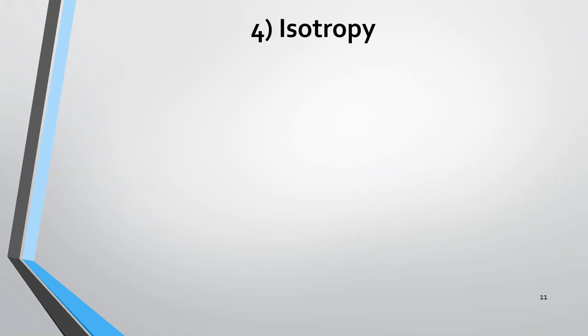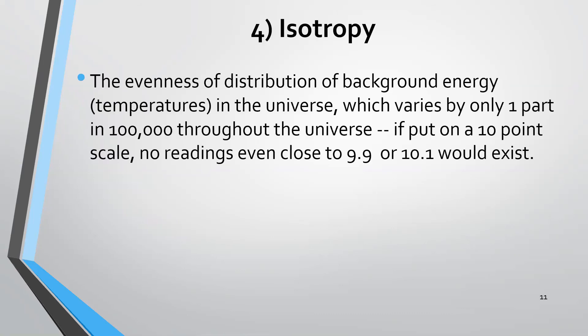Isotropy, this is the fourth one. Isotropy is the level of evenness of the distribution of background energy or temperatures in the universe, the evenness of the spread of the energy and the matter throughout the universe. It varies by only one part in 100,000 throughout the universe. Anywhere you look up in the night sky and you see stars, they're evenly spread out, roughly. If we were to put this on a 10-point scale, you wouldn't have any readings even close to 9.9 or 10.1. It would have to be in that range of 10.